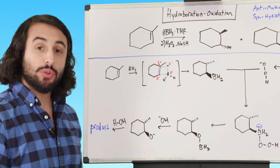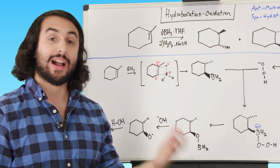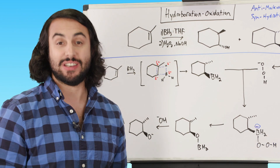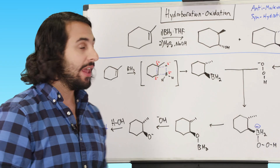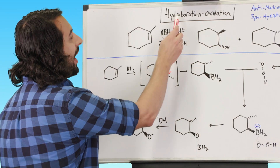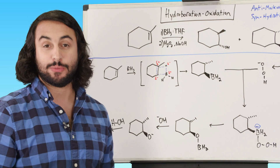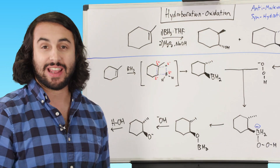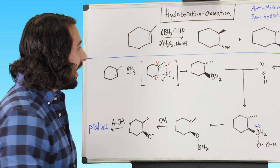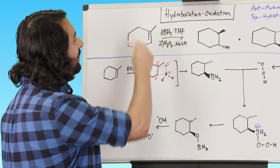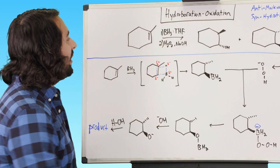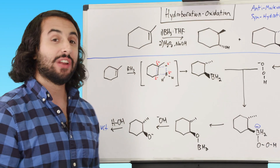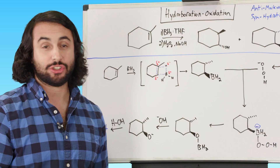This happens in two steps: a hydroboration and an oxidation. The first step is the hydroboration. The way we remember these conditions is boron — so if you see BH3, that's a pretty good indicator that we're going to be doing this reaction. Given this alkene, these conditions are going to perform an anti-Markovnikov hydration, and it will do so in syn fashion.